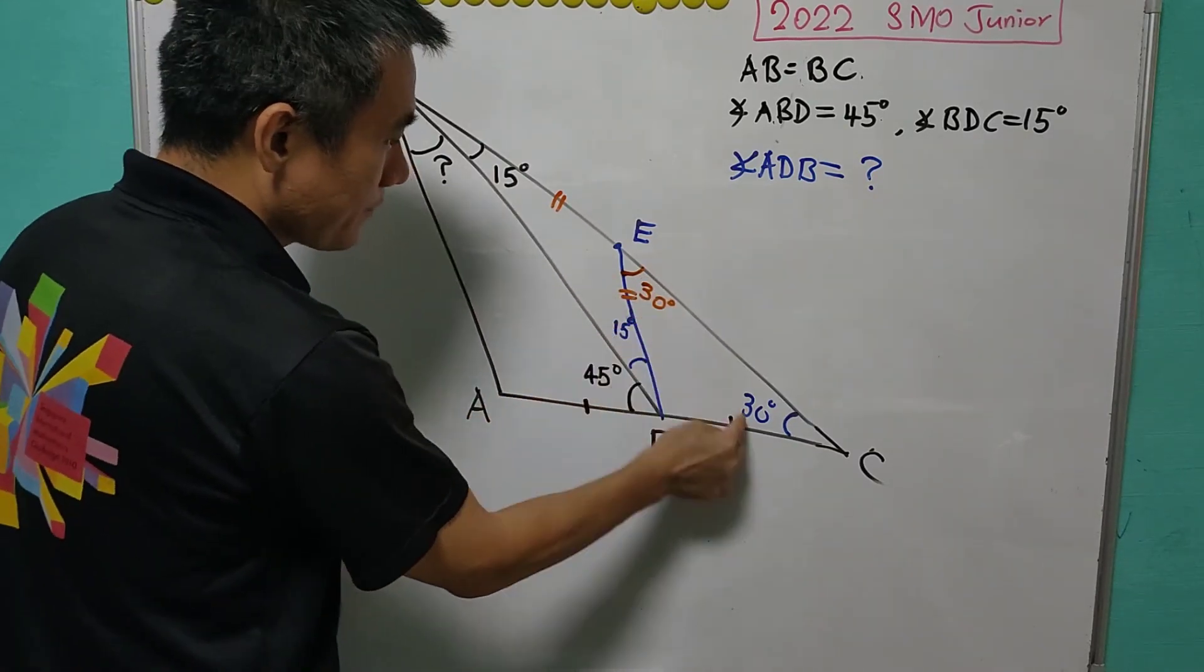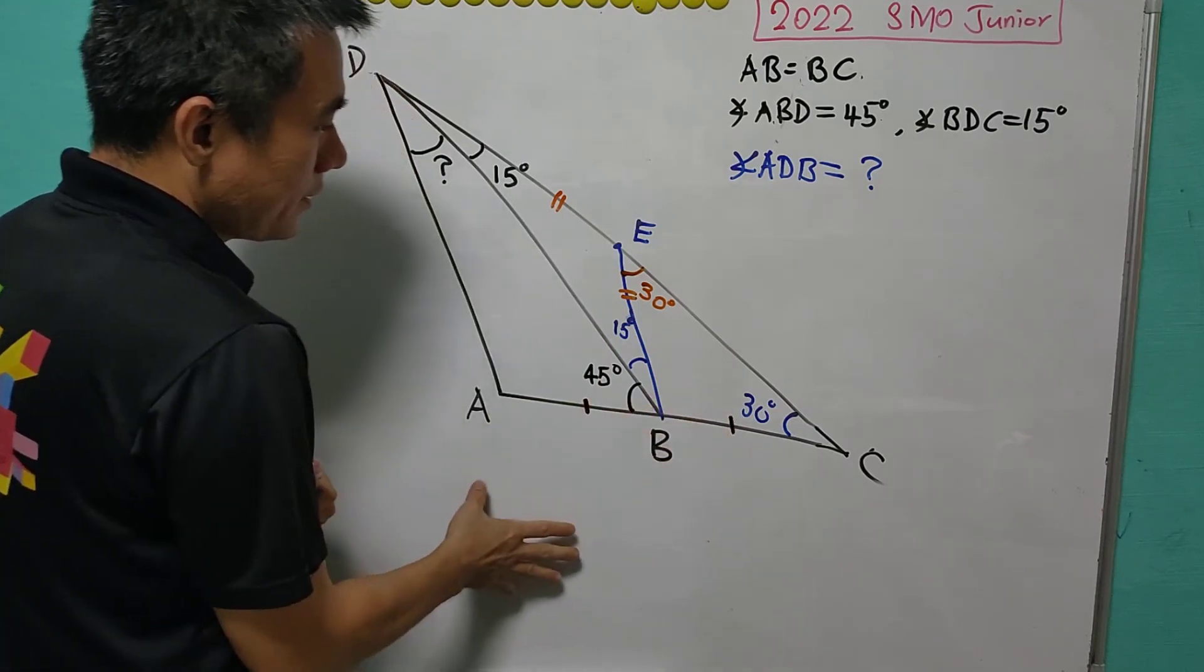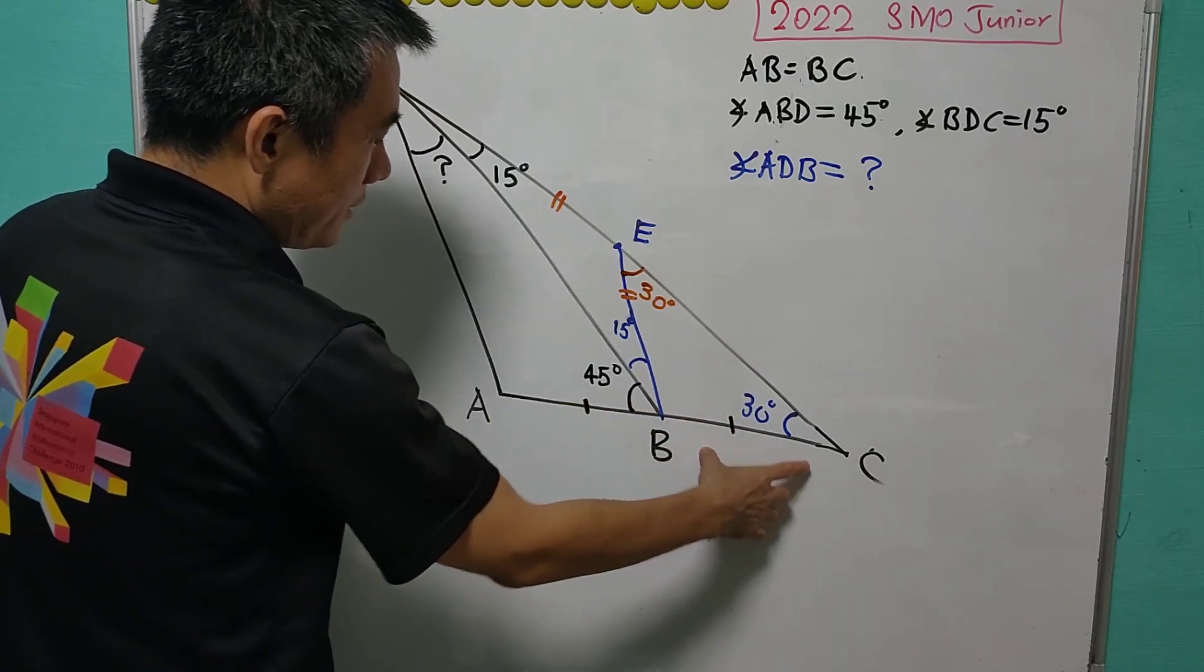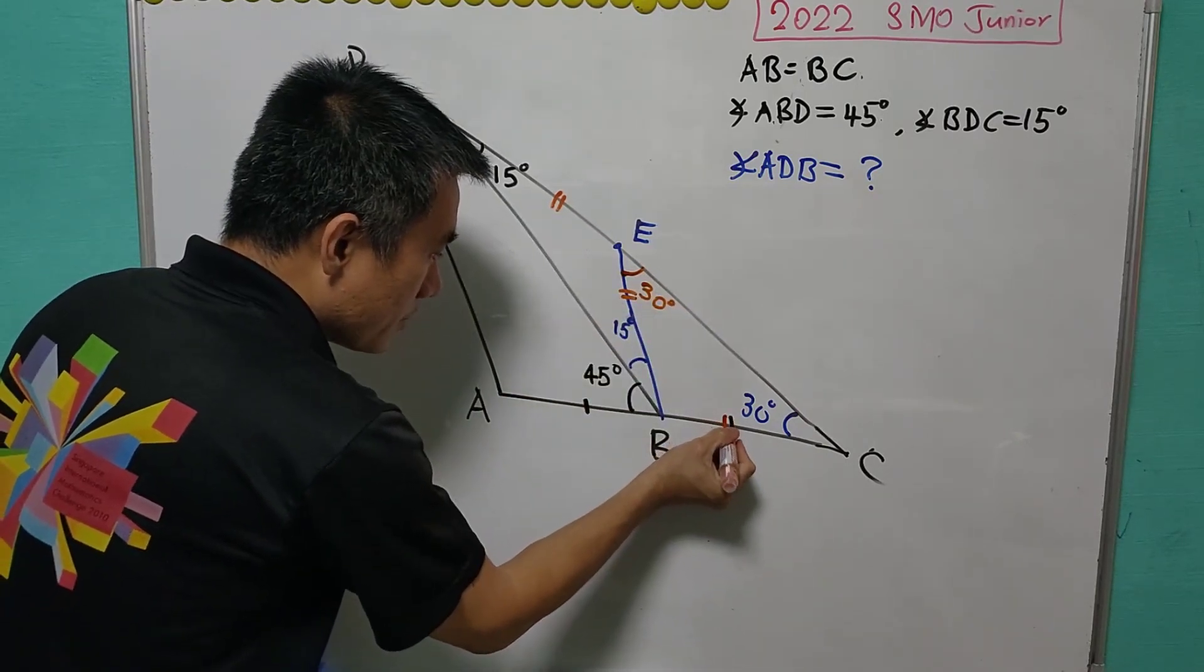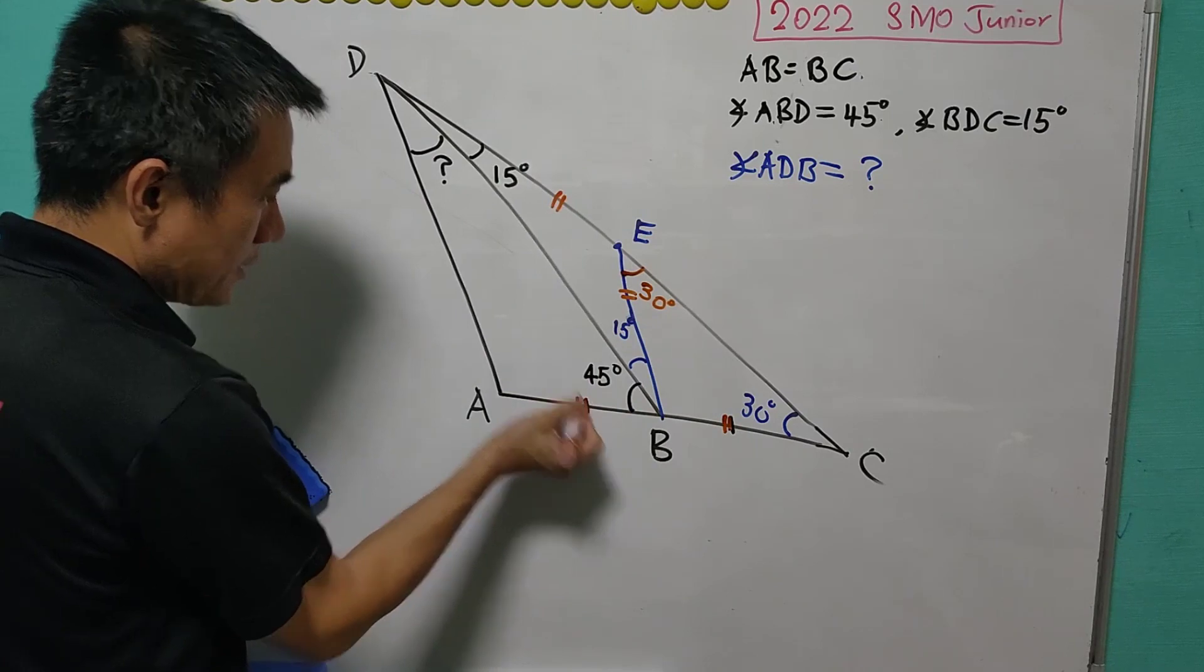Since this is 30 degrees and this is 30 degrees, then we know that BC equals to BE, which is also the same as AB.